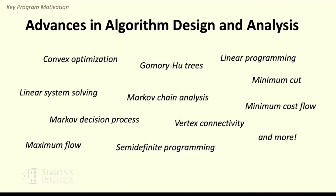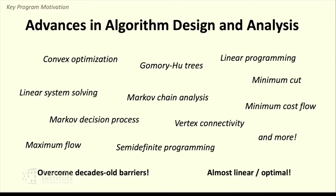For a wide range of fundamental foundational algorithmic and optimization problems — like convex programming, linear system solving, analyzing random walks and Markov chains, computing flows in graphs, and optimizing Markov decision processes — there has been breakthrough after breakthrough, in many cases improving run times that haven't seen improvements for decades, and in some cases achieving holy grail results of provably solving these problems in nearly linear or almost linear time.